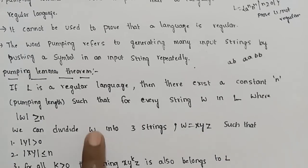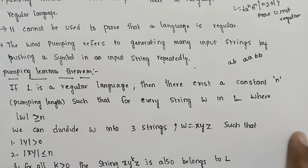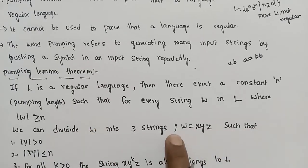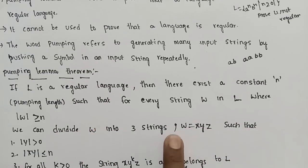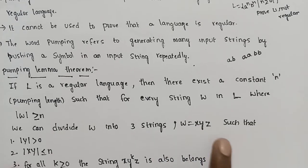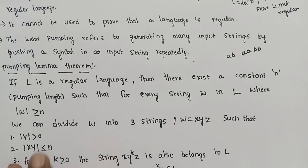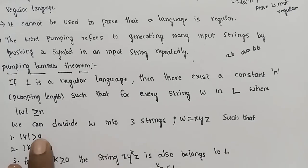We divide the string. We divide the string into x, y, z. Then, from that division, y is not empty — the length of y is greater than 0.